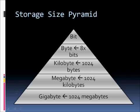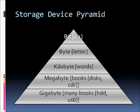When we talk about storage, we talk about it in terms of size units. A bit is a nought or a one — the smallest possible unit. A byte is eight bits strung together. A kilobyte is 1024 bytes, a megabyte is 1024 kilobytes, and a gigabyte is 1024 megabytes. These map to real-world analogies: a bit is a letter, a kilobyte is words, a megabyte is books stored on disks or CD-ROMs, and a gigabyte is many books stored on a hard disk or USB device.